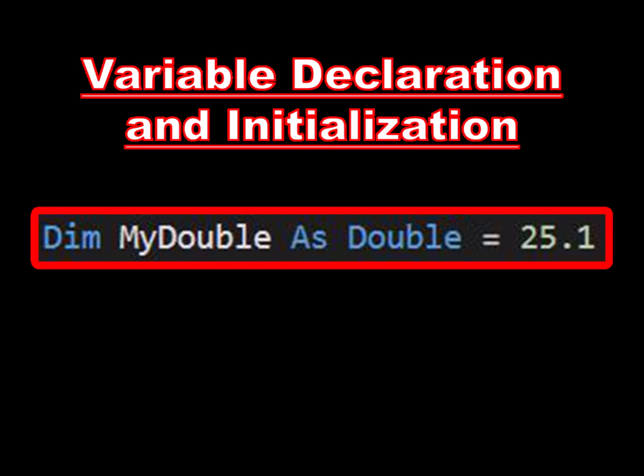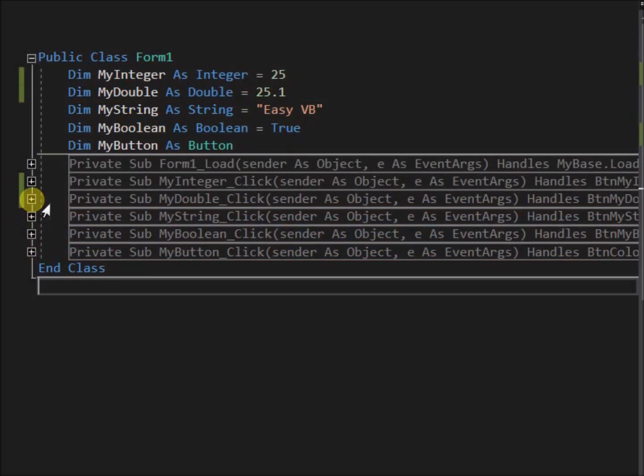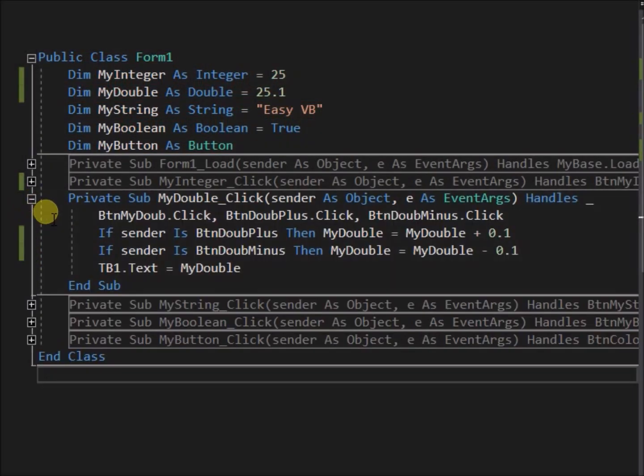Now let's look at an example of a real number variable — that is, a number which can have decimal places. We have written the variable declaration statement: dim my_double as double. Note that double is just the name of a data type for real numbers that supports decimal places. On the same line we have initiated my_double with a value by tagging on equals 25.1. This changes the default value of my_double from 0 to 25.1 at the start of run time. Again we have some code pre-written, a button click sub for the green colored buttons. Let's open up that code and have a look.